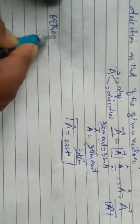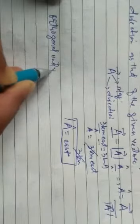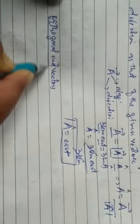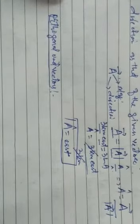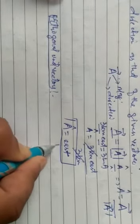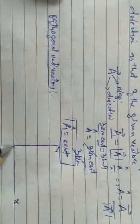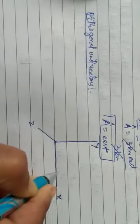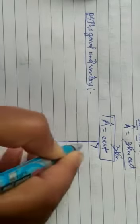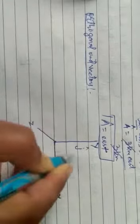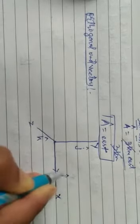Now let us discuss orthogonal unit vectors. We have three axes: the x-axis, the y-axis, and the z-axis. Along the x-axis there is a unit vector called i-cap; along the y-axis there is a unit vector called j-cap; and along the z-axis there is a unit vector called k-cap.